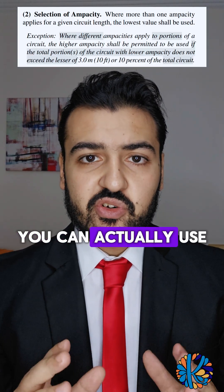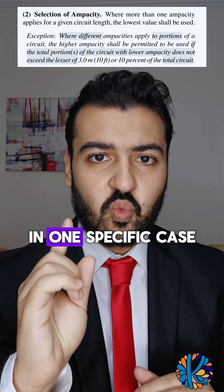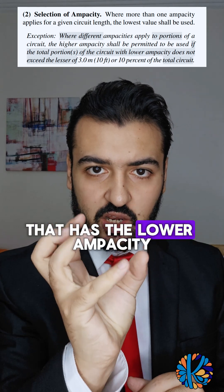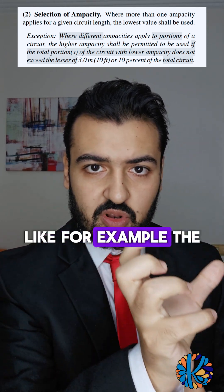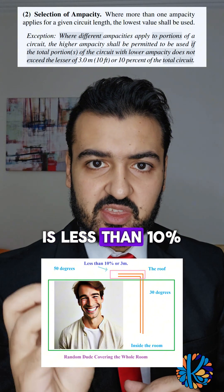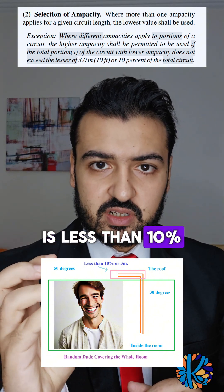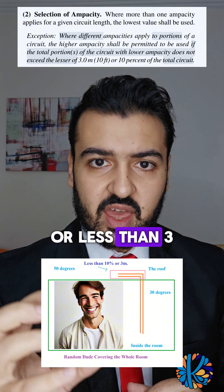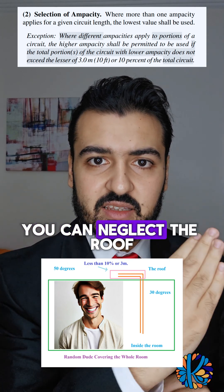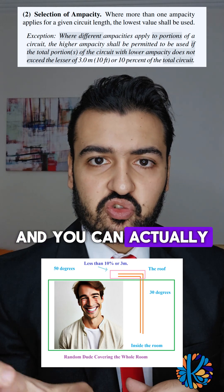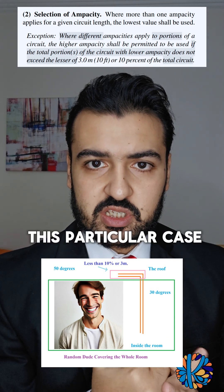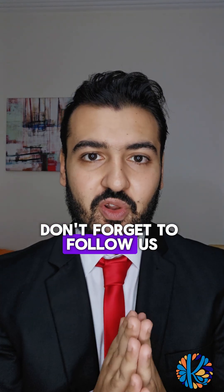However, there is an exception to this rule. You can actually use the higher ampacity in one specific case: if the total portion of the circuit that has the lower ampacity — for example, the part of the conductor on the roof — is less than 10% of the total circuit or less than three meters, then you can neglect that portion and select the higher ampacity, which is unity in this particular case.